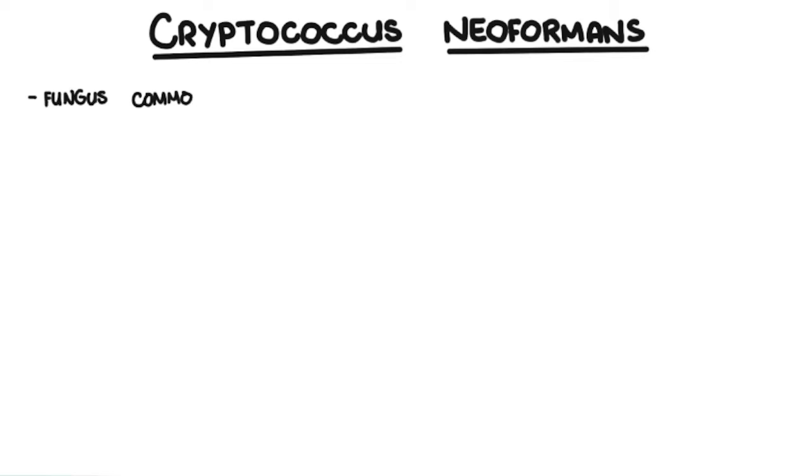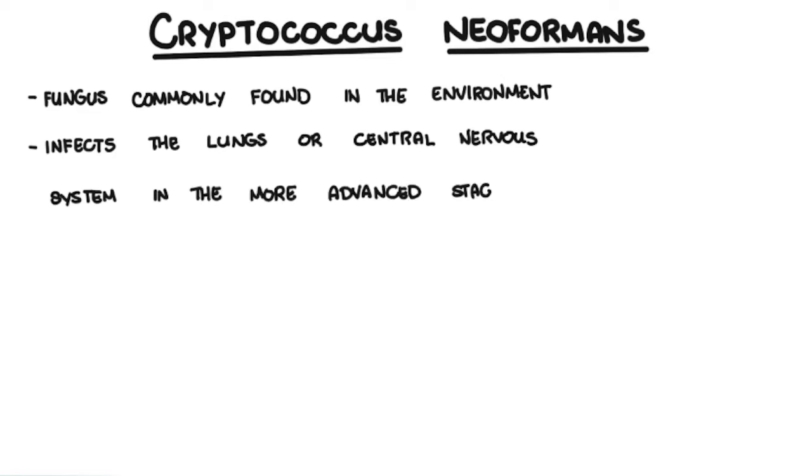Cryptococcus neoformans is a fungus commonly found in the environment and usually infects the lungs or the central nervous system in more advanced stage.